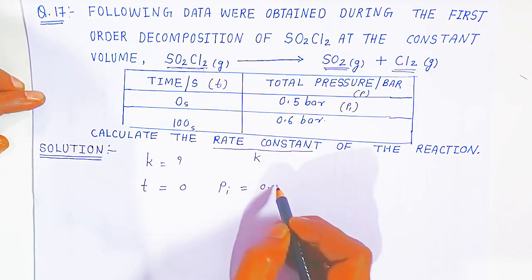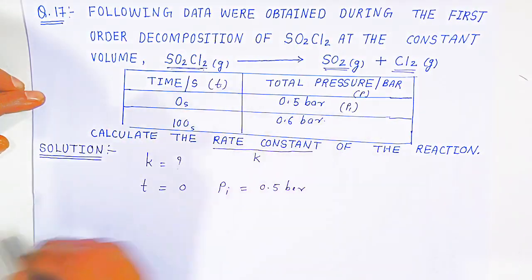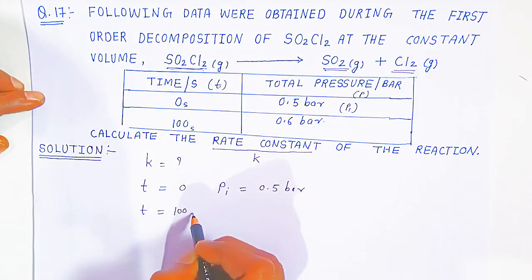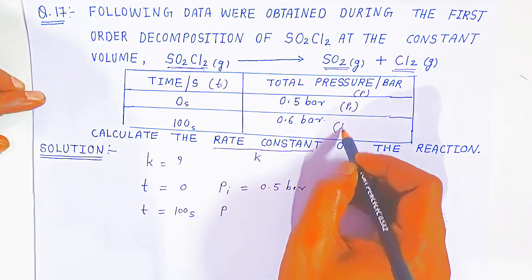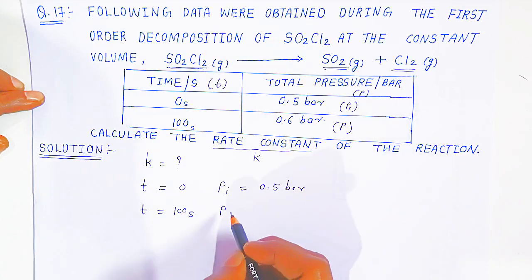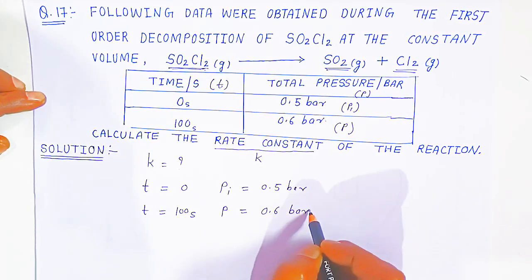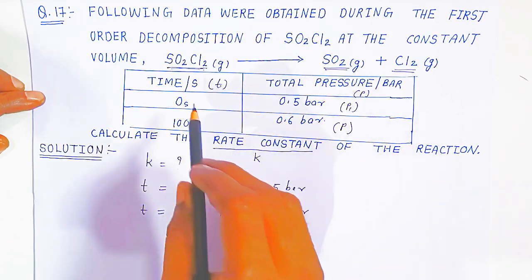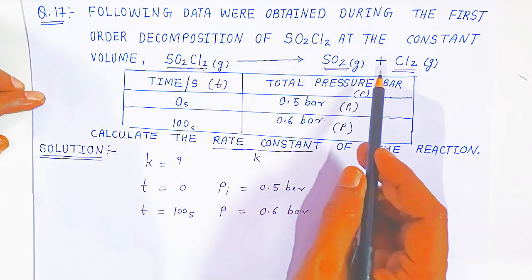The initial pressure Pᵢ is 0.5 bar when time is zero. When time is 100 seconds, pressure P is 0.6 bar. All our species — reactant as well as products — are gases.